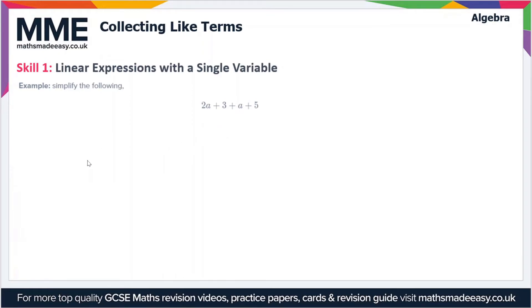So the way we collect these like terms is we just add the terms together. So 2a plus a is equal to 3a, and obviously 3 plus 5 is just equal to 8. So our final answer is just 3a plus 8.